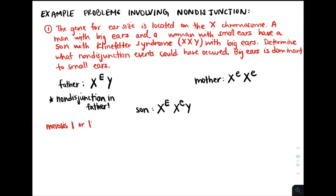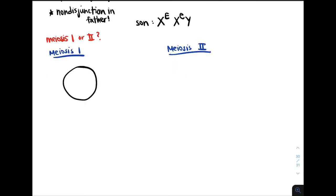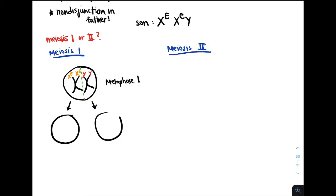We just have to figure out if it occurred in meiosis 1 or meiosis 2. Let's draw it out. Non-disjunction could have occurred in meiosis 1 or 2, but we're not sure yet. If this is our cell in prophase, we have an X chromosome with the big E allele and a Y chromosome. If this cell was in metaphase 1 during meiosis 1, we would expect homologous chromosomes to split apart along the metaphase plate. But if there is non-disjunction in meiosis 1, the homologous chromosomes stay together, so both will go into one cell.